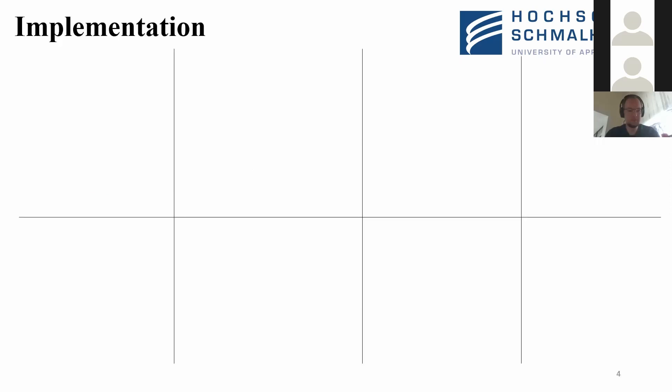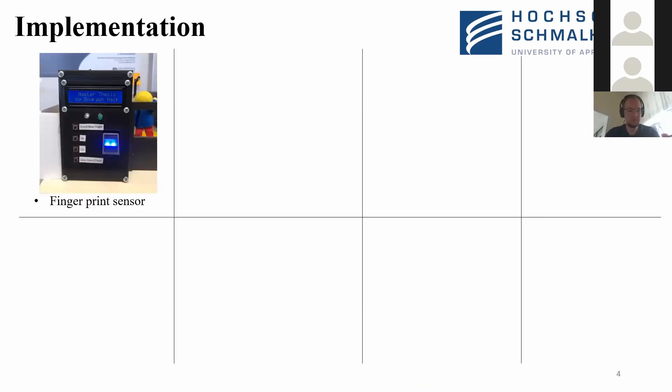In this slide we will look at all eight implementations I have done in the smart home automation system. The first implementation is the fingerprint sensor. Once an old person comes, they can just press their finger onto the sensor and press the gate-open button, and the gate will automatically open. I will show a proper working video of this sensor at the end of the slides.